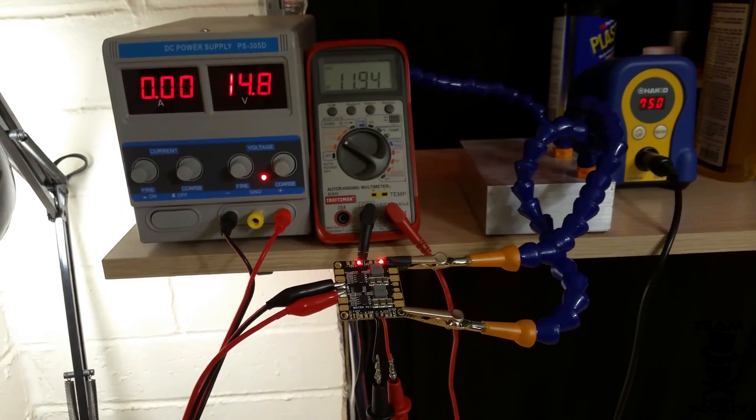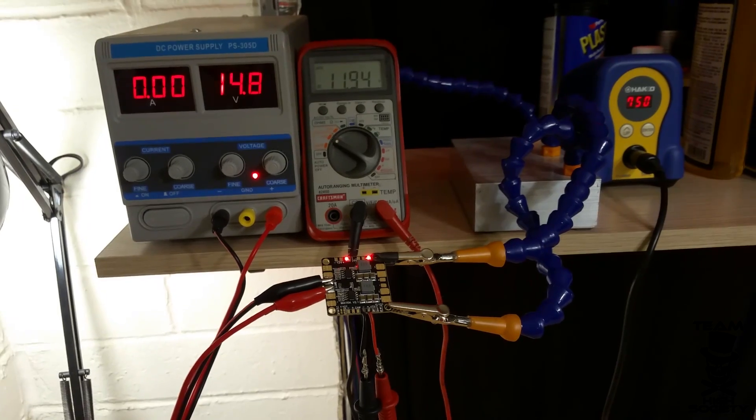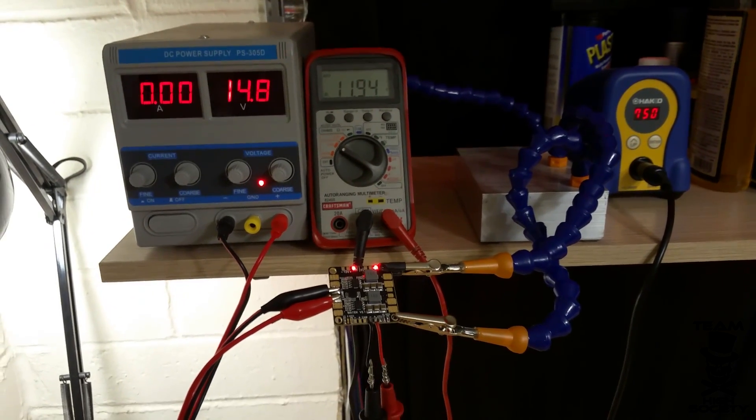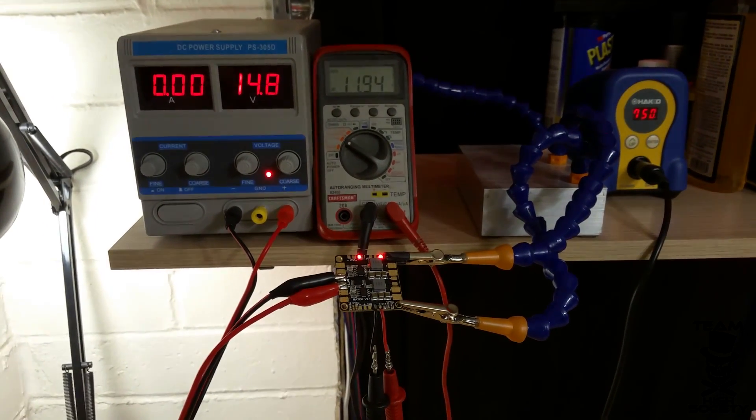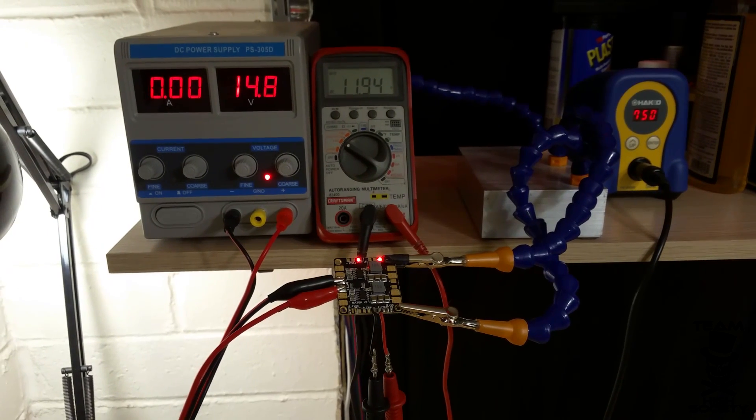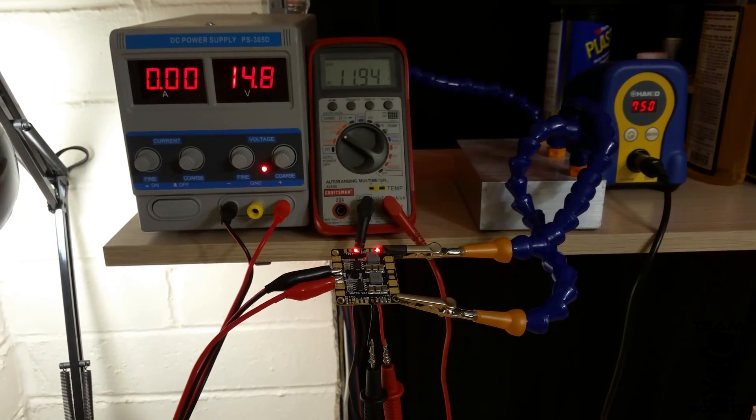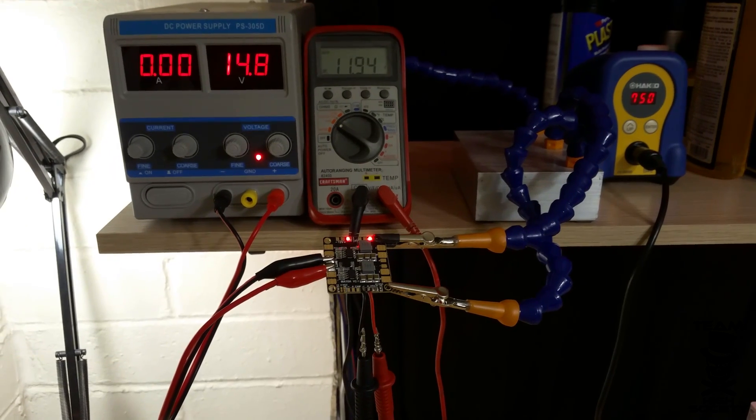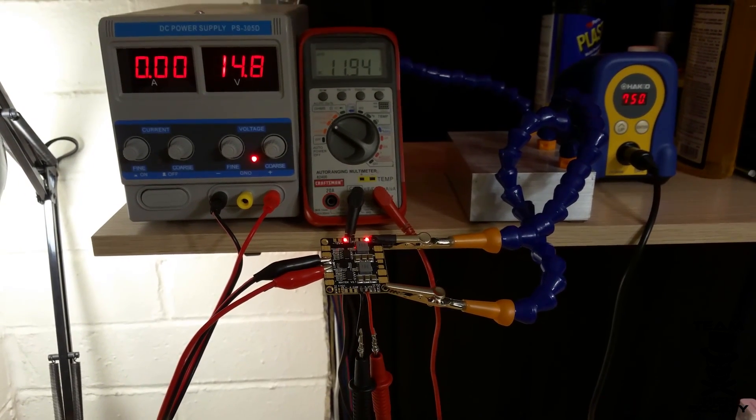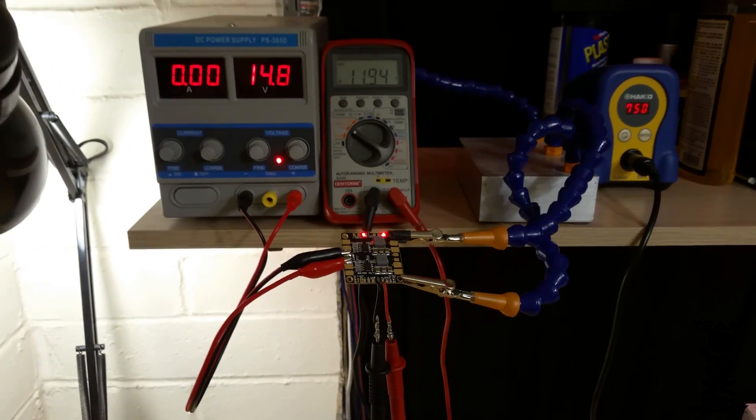So during flight on a hard pull we lose video and this can be with a brand new full battery. We've run a Tattu battery, a Pulse battery, a Hobby King battery, none of them matter. Under a full pull on a quad even with a fresh battery we get a drop in the voltage and then the BEC just dies on you and you lose all your VTX.